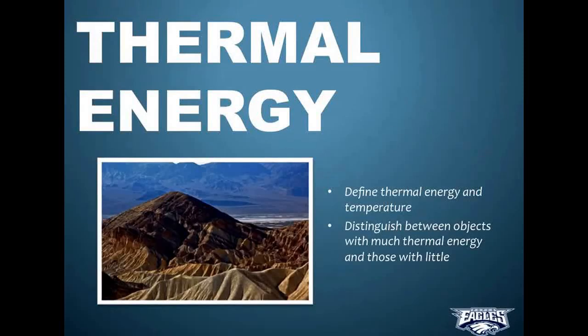This cool-looking picture is actually the hottest place in the United States. It's Death Valley, California. It can reach temperatures up to 57 degrees Celsius, or 134 degrees Fahrenheit, and that's in the shade, if you can actually find some. The temperature of the sand in the baking sun can be much higher, and if you were actually able to walk on the sand with bare feet, it would totally burn your feet.